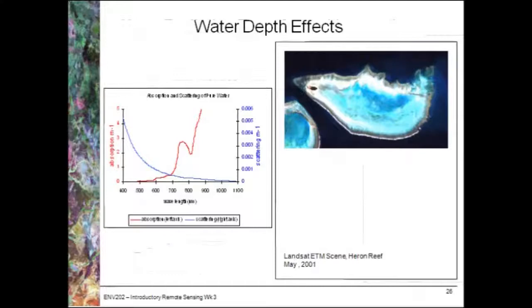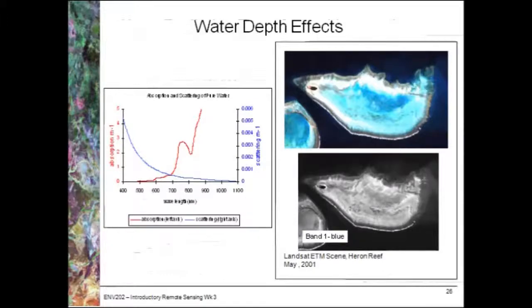In the image at the top right hand corner we've got an image of Heron Reef. Most of the reef is actually under water. If you have a look in the grayscale image of the blue band you can still see quite a lot of information across the reef. That's just meaning that blue light is able to penetrate through most of those wavelengths.